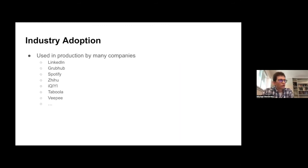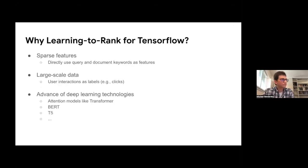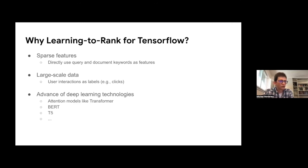TF-Ranking is used by many industrial companies — LinkedIn, Grubhub, Spotify, and others use it in their production systems. It provides capabilities that standard LTR libraries like LightGBM don't: sparse features such as raw query and document keyword features (what TFR-BERT does), scaling to billions of interactions like clicks, and taking advantage of deep learning advances like transformers, BERT, T5, and larger models. As long as a model is implemented in TensorFlow, we can plug in ranking losses.